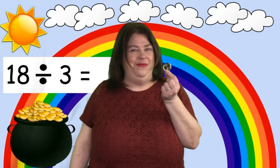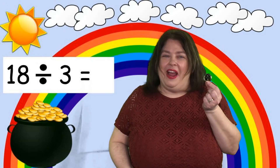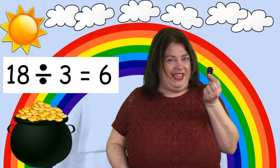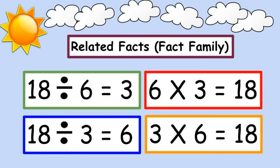See if you can figure out the last division problem inside the pot of gold. Pause the video and then play it again when you're ready to check. Our last division problem is 18 divided by 3 — the answer is 6. 18 divided by 3 equals 6. Let's look back at the related fact families together. Each equation uses the same numbers: 18, 6, and 3. The only difference is that we switch the numbers around. For division, always start with 18 or the largest number; for multiplication, always end with the largest number.